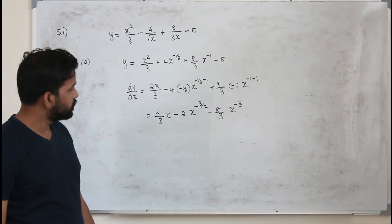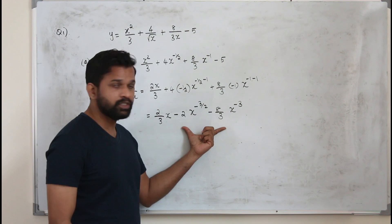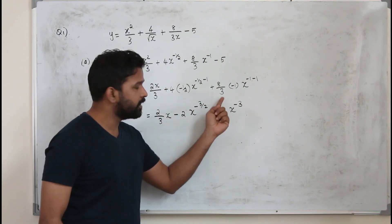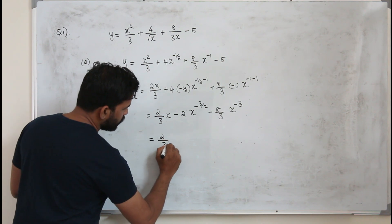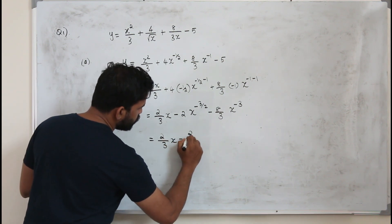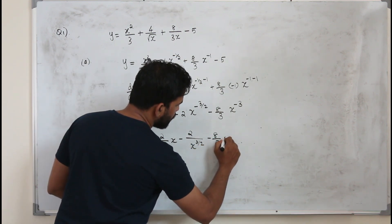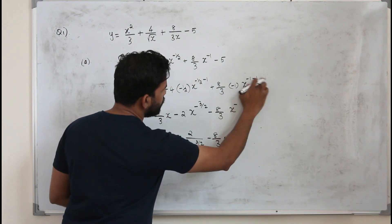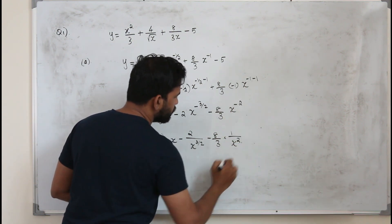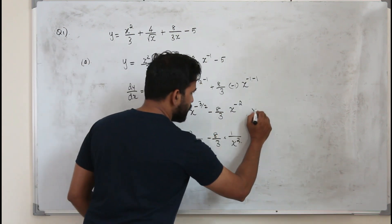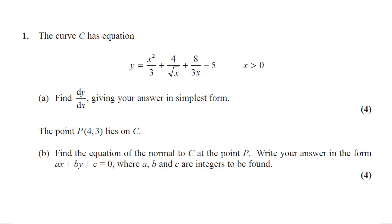This question has 4 marks. You can leave the answer with negative indices, or rewrite it as 2 over 3x minus 2 over x to the power 3/2 minus 8 over 3x squared. Part B: the point P(4, 3) lies on C. Find the equation of the normal to C at the point P. Write your answer in the form ax + by + c = 0 where a, b, and c are integers. This question carries 4 marks.